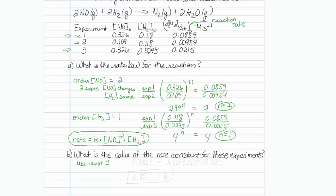So my rate, which is 0.0859 is equal to my rate constant, which is what I would like to find, times my NO 0.326 squared times my H2 to the first power. So let me do some math, and I get that k is equal to 6.85.